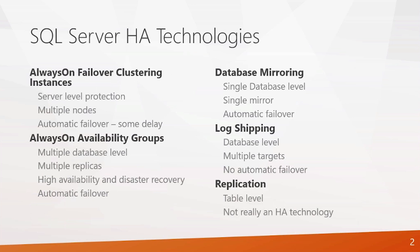SQL Server has a number of different high availability technologies. For protection at the server level, there's Always On Failover Clustering Instances. For protection at the database level, there's Always On Availability Groups, and also at the database level there's database mirroring. And for disaster recovery there's log shipping, and finally there's replication. In this presentation we're going to compare these and have a quick look at which of these technologies is best suited to which kind of scenarios.